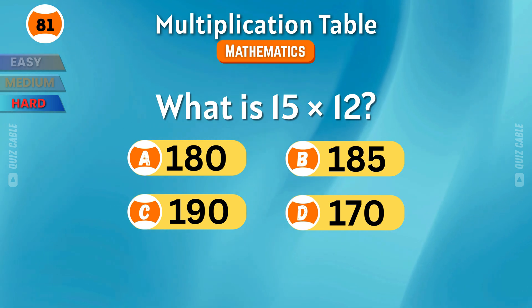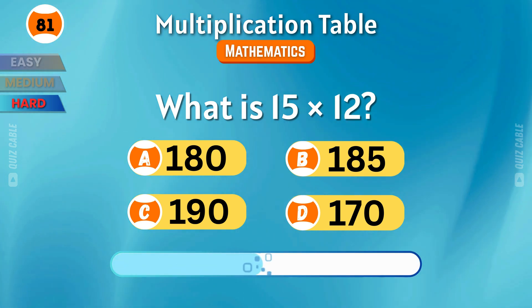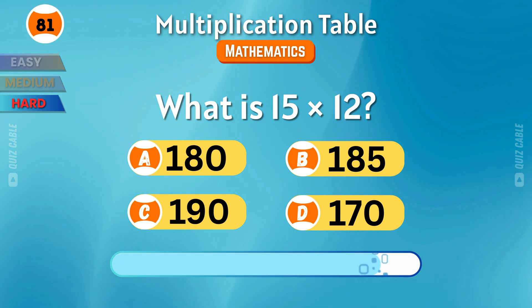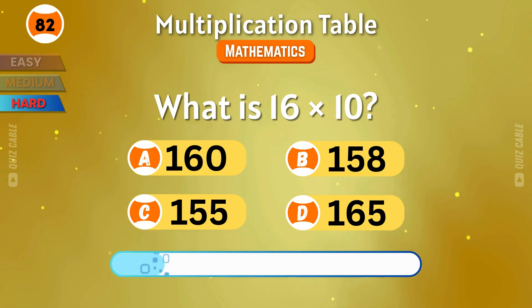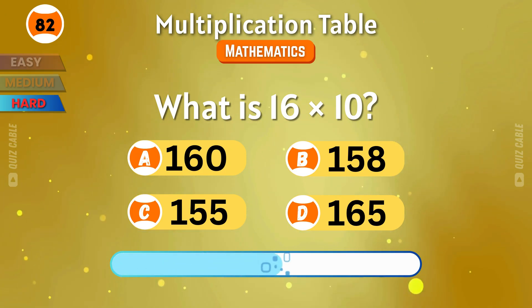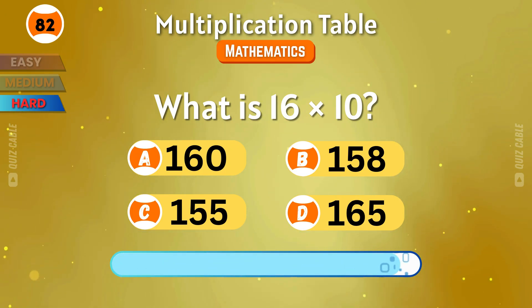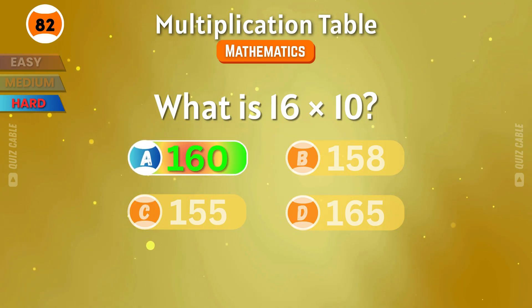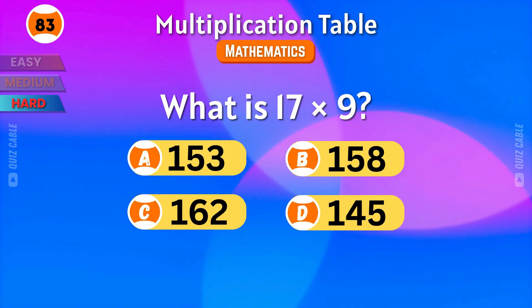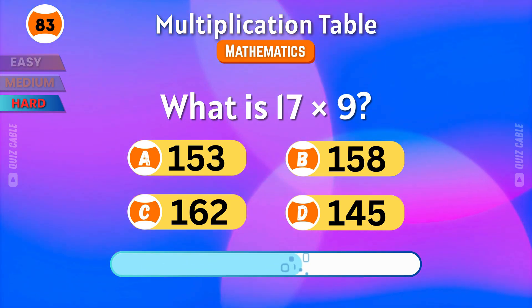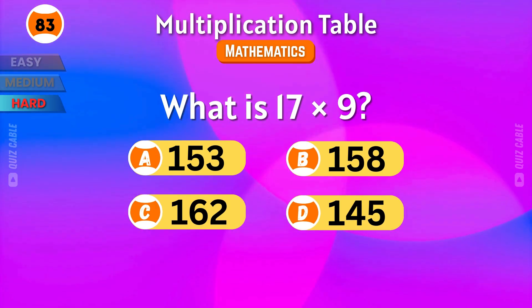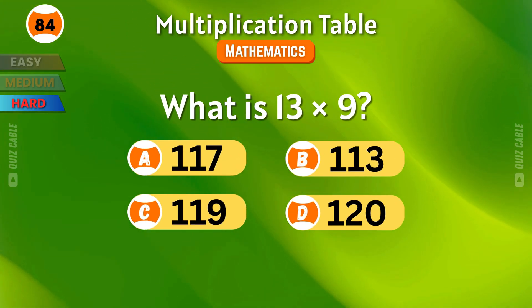What is 15 times 12? What is 17 times 9? The answer is 153. What is 13 times 9? That's 117.